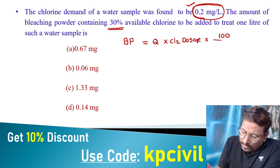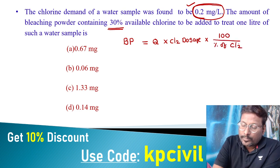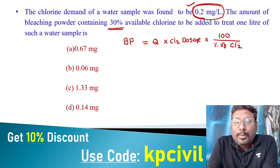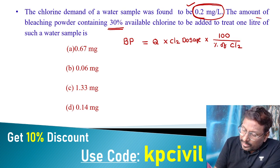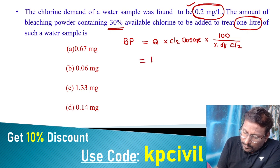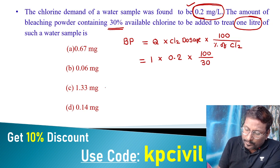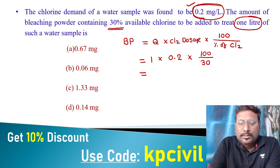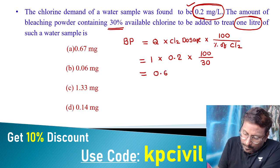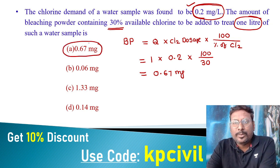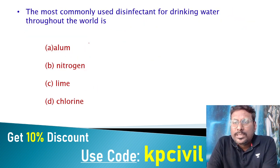We have solved this formula in many plus class and free class sessions. Amount of bleaching powder = discharge (1 liter) × chlorine dosage (0.2 mg/L) × 100/30. This gives 0.67 mg. The most commonly used disinfectant for water throughout the world — the universal disinfectant — is chlorine.